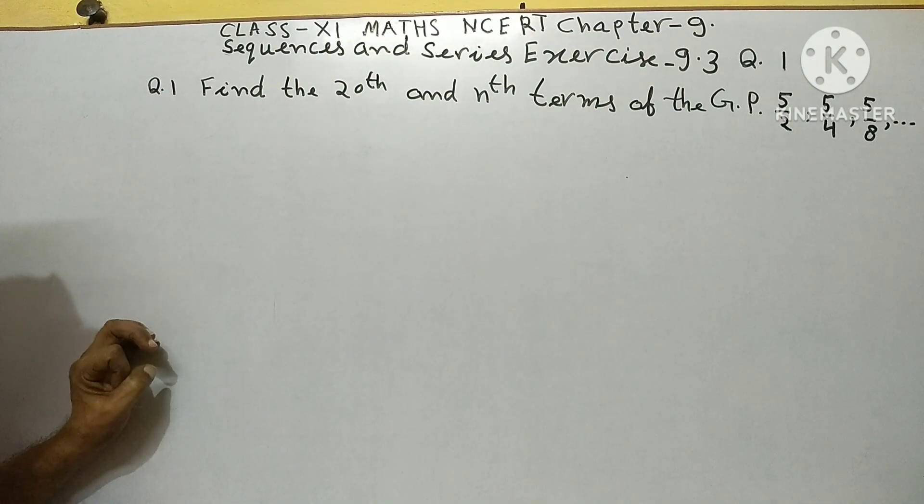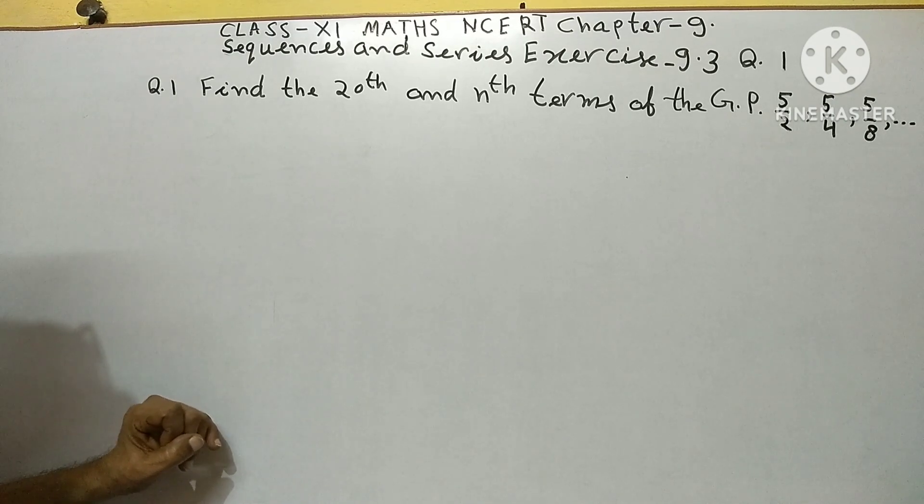Find the 20th and nth terms of the GP: 5 upon 2, 5 upon 4, 5 upon 8, and so on.